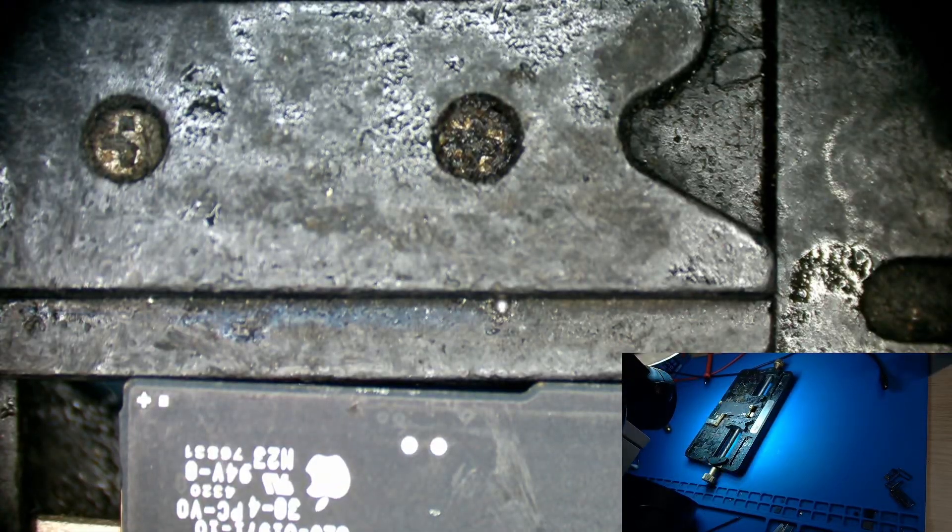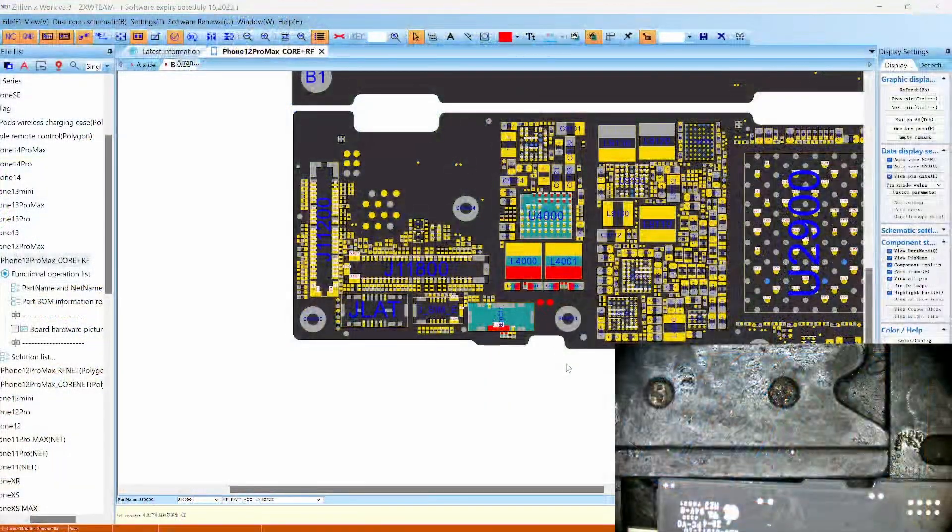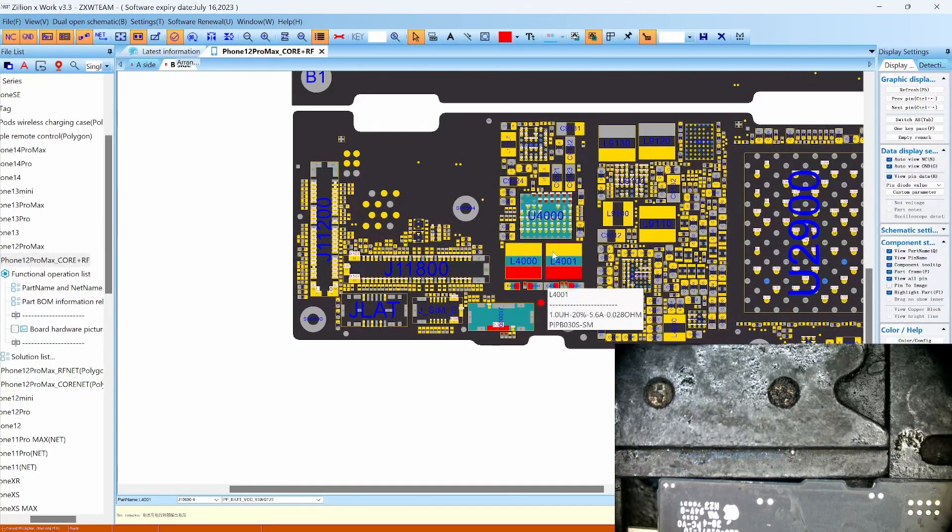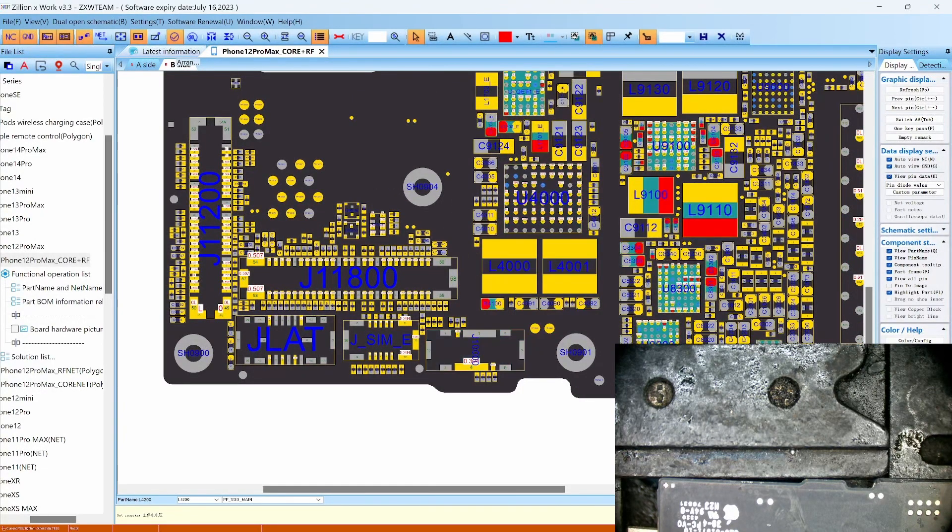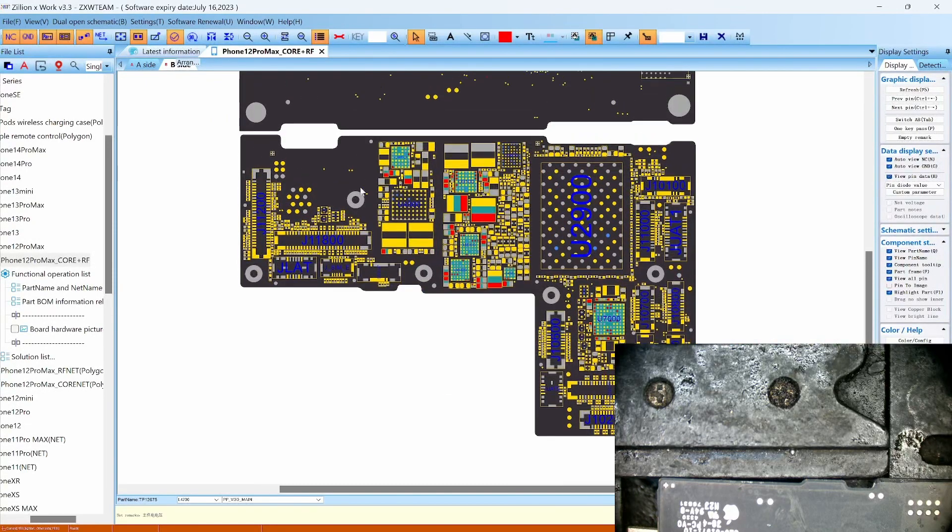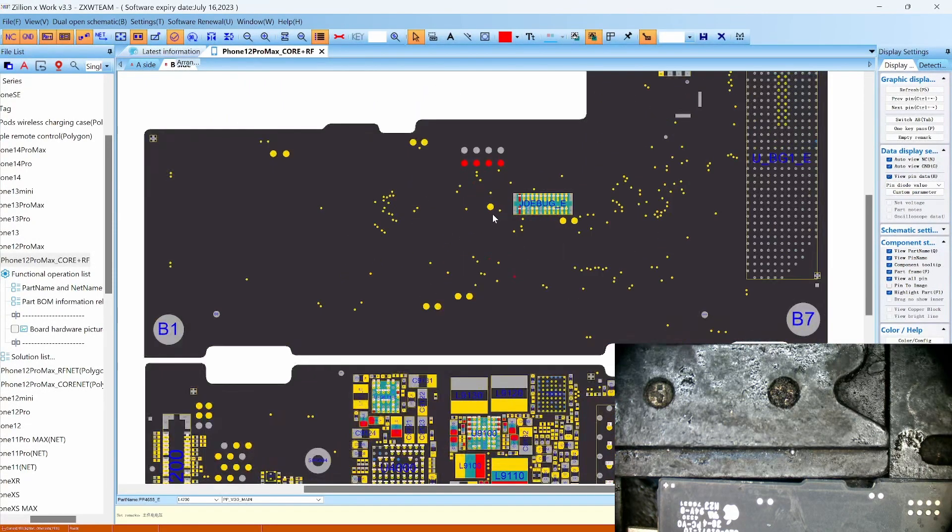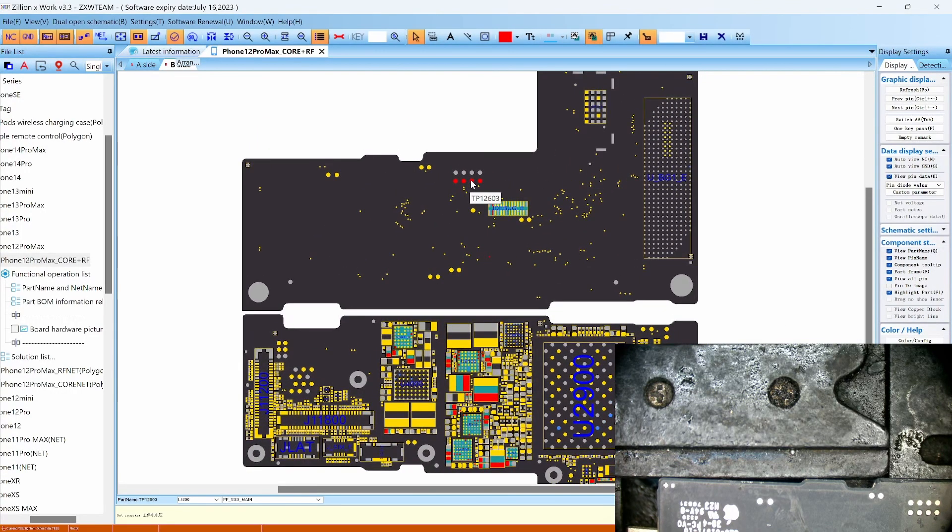So let's go back to the schematic. So VDD main is somewhere right here. VDD main is also connected to the battery somewhere along the battery as well. So not the battery, but also the charging IC as well. Let's look at the back. So as we see VDD mains are on these right here.